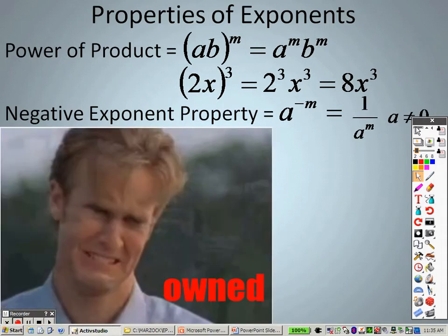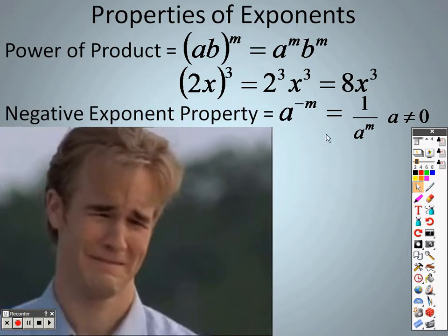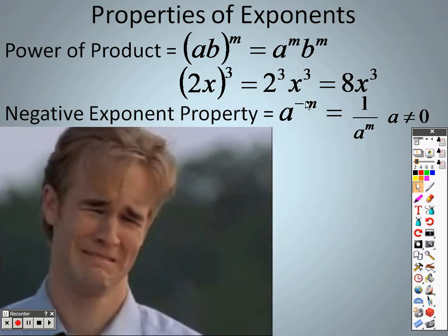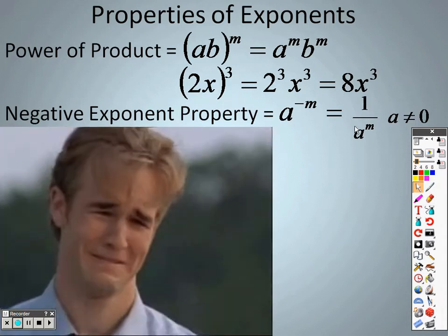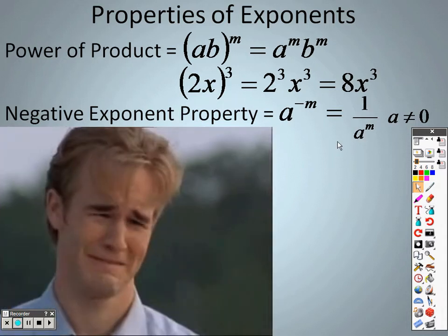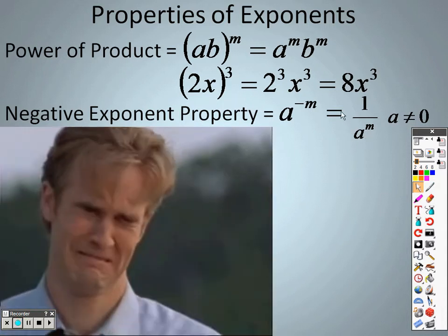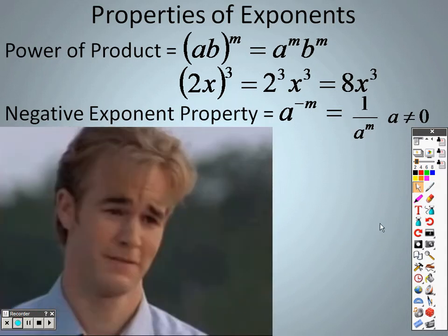So what that means is, is if I have a negative exponent, which I do, if I have a negative exponent on the numerator, I'm going to move it to the denominator. That's why it's 1 over a to the m. What I also want you to keep in mind is if I have a negative exponent on the denominator, I would move that to the numerator. So I want to make sure you keep that in mind.